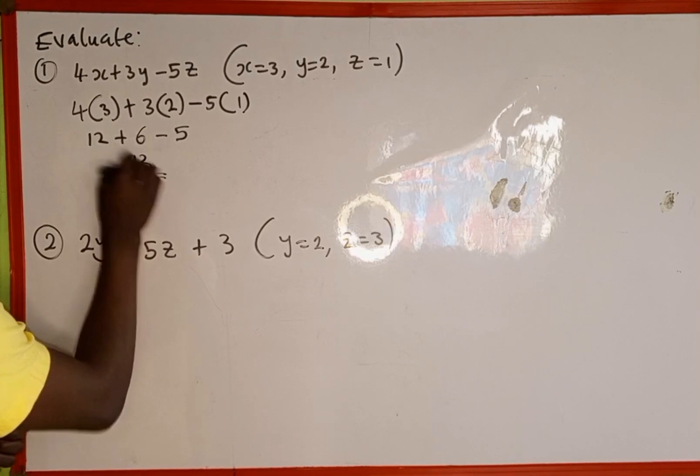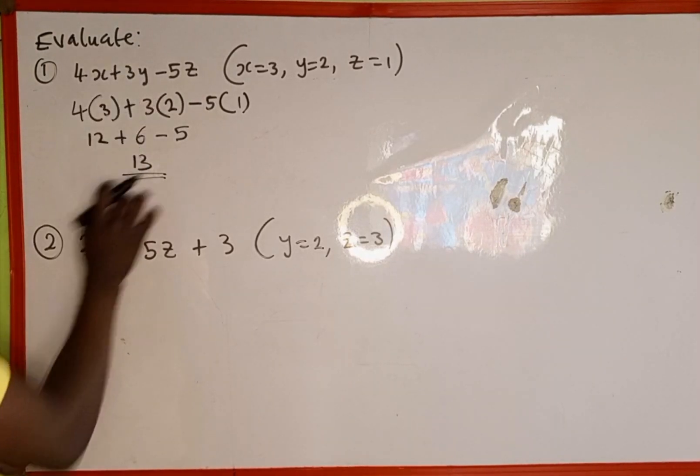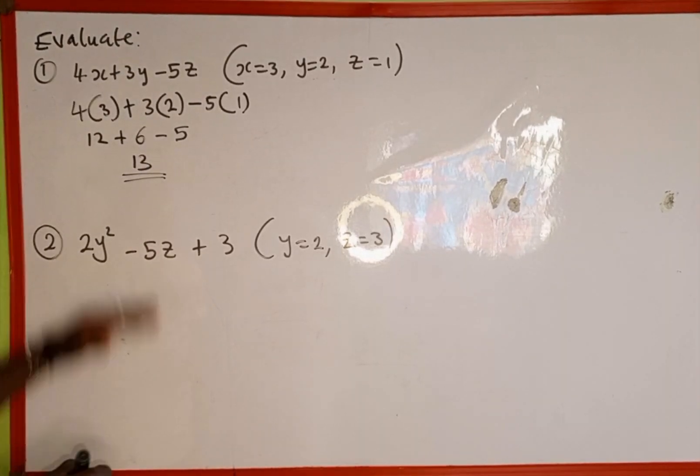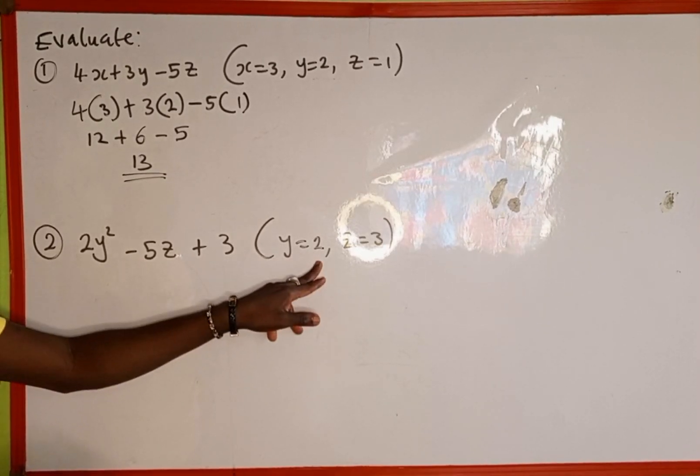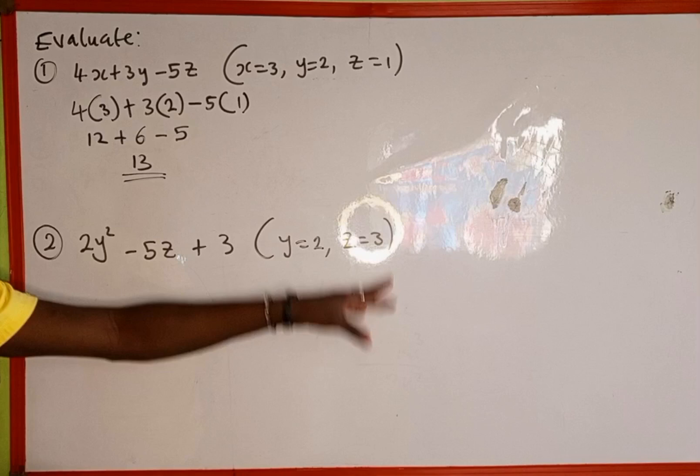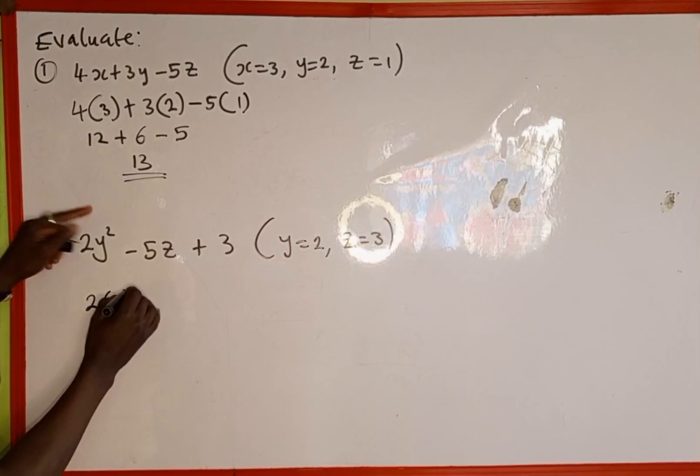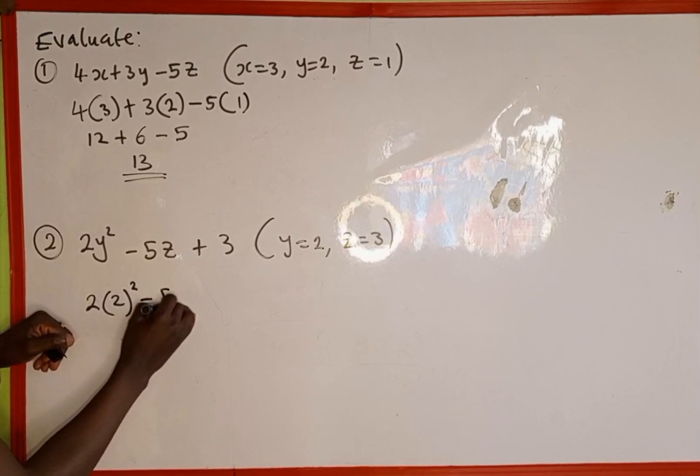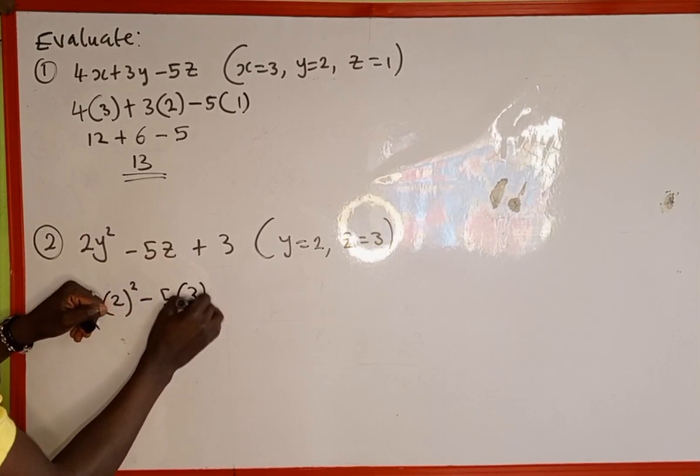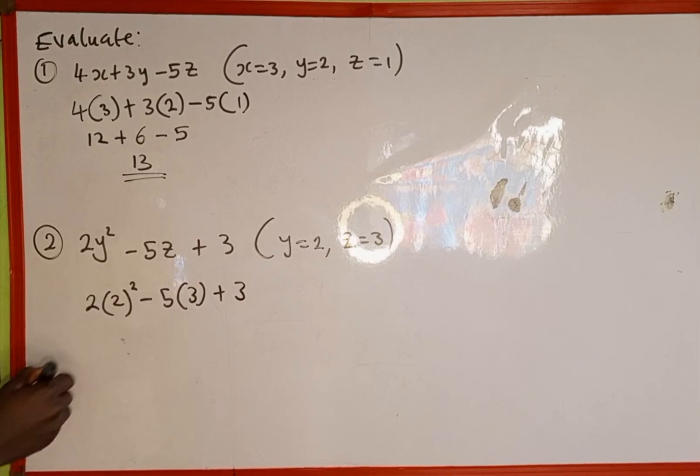Now example 2: 2y² - 5z + 3, where y = 2 and z = 3. We replace again: in place of y we put 2 squared, minus 5 in place of z we replace 3, then plus 3.